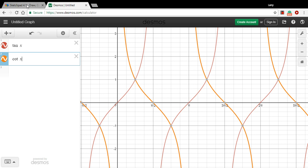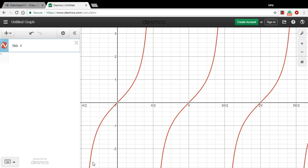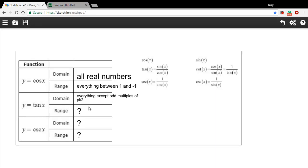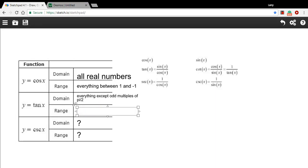So on the cotangent, you would just say the domain is everything except multiples of pi. How about the range on the tangent function? Let me get rid of this cotangent for a minute. You can see that the y values, it goes up to infinity, down to negative infinity, covers everything in between. So that's just going to be all real numbers.